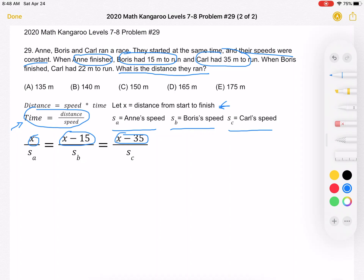And now we can also set up another equation using another part of the problem. We know that when Boris finishes, Carl had 22 meters to run. So when Boris finishes at that time, he has gone a total of x meters, right? Because he finished. He went all the way from start to finish. And Carl has gone a total of x minus 22 meters. And again, Boris's speed is constant s sub b. Carl's speed is constant s sub c.